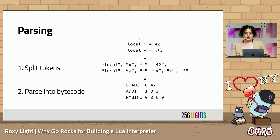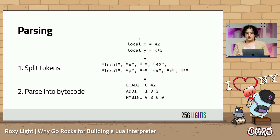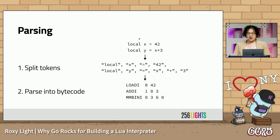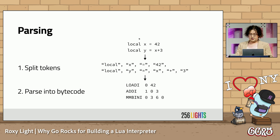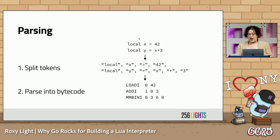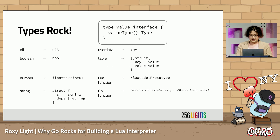In step two, the lua-code package, we turn the tokens into instructions — Uint32s under the hood, but in this talk I'll show them in disassembly. From top to bottom, these instructions mean: load 42 into register zero; add three to the value in register zero and store it into register one; and finally, if the values weren't numbers, call the meta method add, which is represented as an enum six.